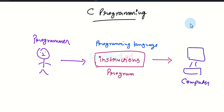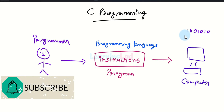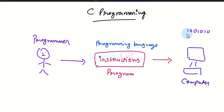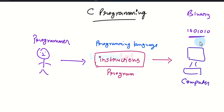Now the question is: what language does the computer speak? Computers speak the language of zeros and ones. All electronics speak the language of zeros and ones. For us this may look like a bunch of zeros and ones, but for a computer this is a valid instruction. This language of zeros and ones is called the binary language, because there are only two possible values — 0 or 1 — hence the name binary language.